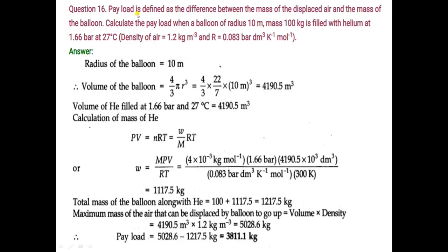According to the definition of payload — the difference between the mass of displaced air and the mass of the balloon — both values are now known. 5028.6 kg is the maximum mass of air that can be displaced by the balloon to go up, and mass of the balloon with helium is 1217.5 kg. The payload is equal to 3811.1 kg.